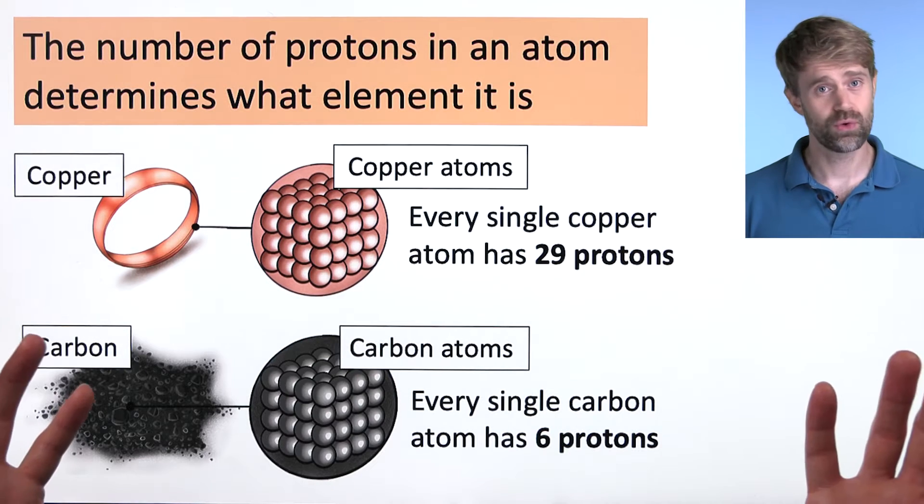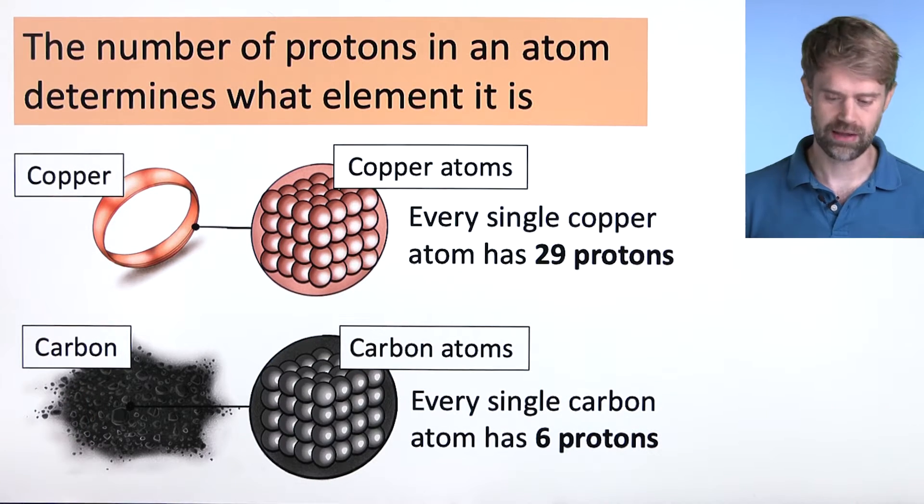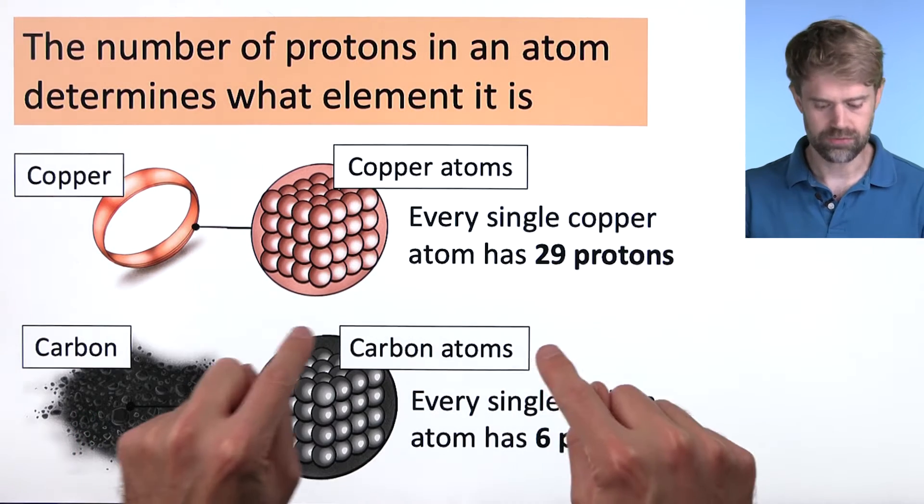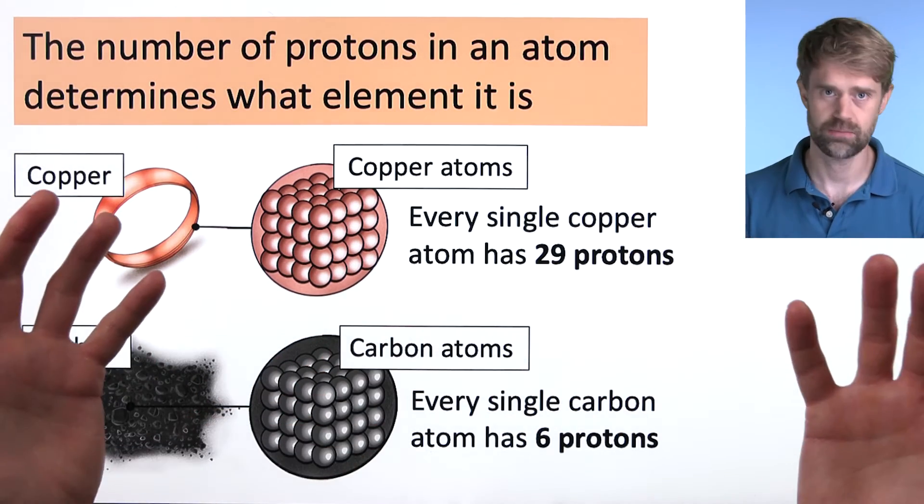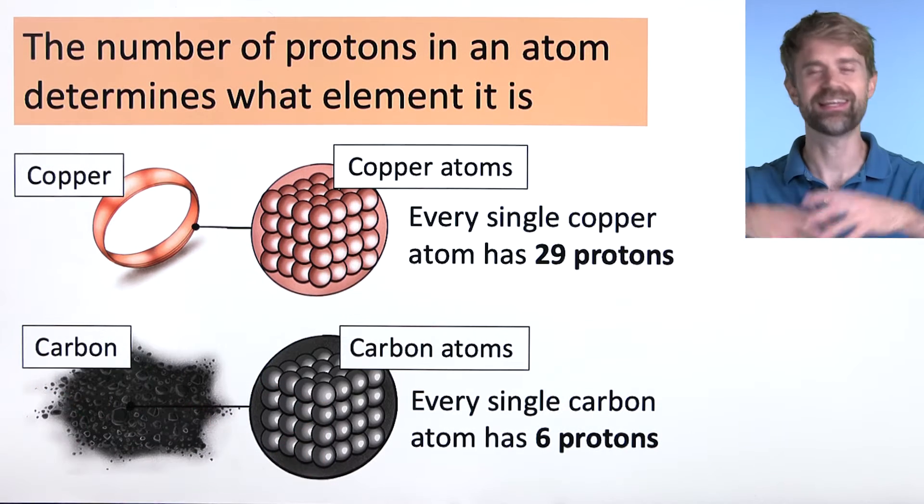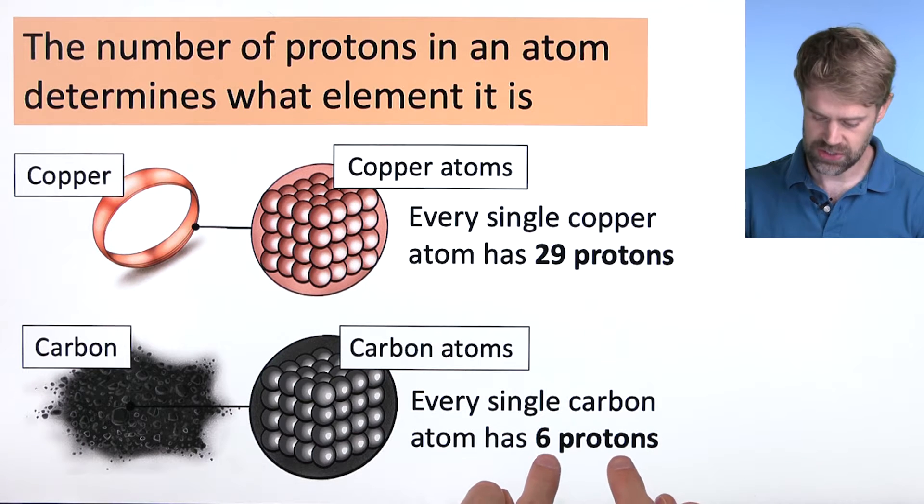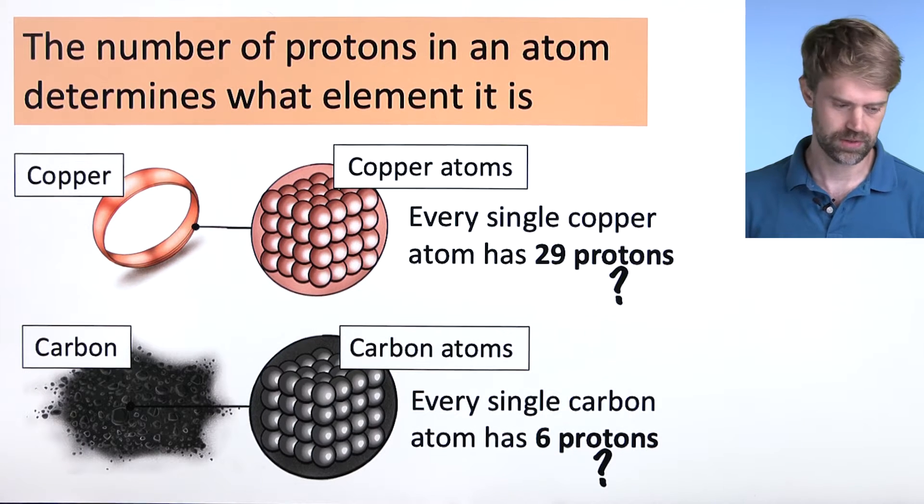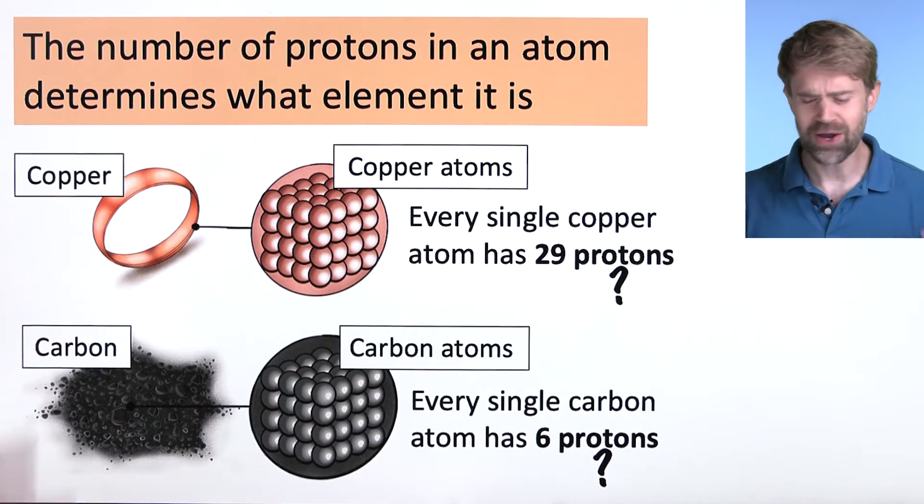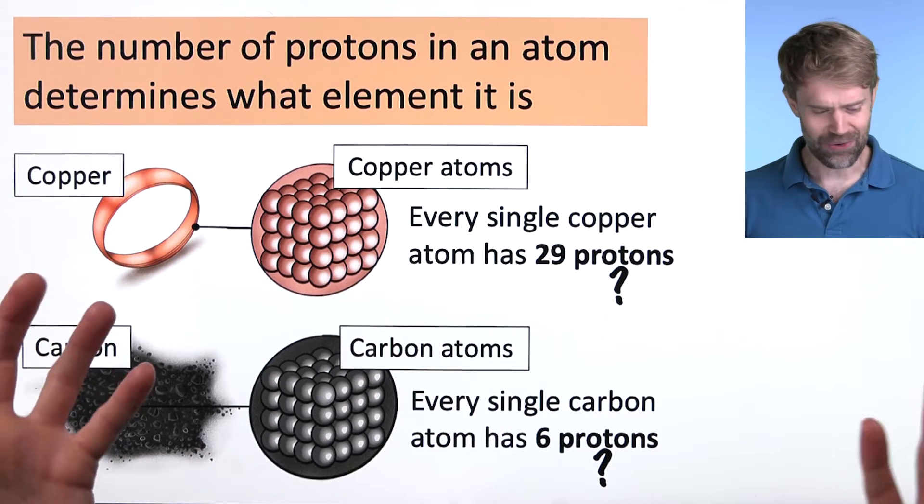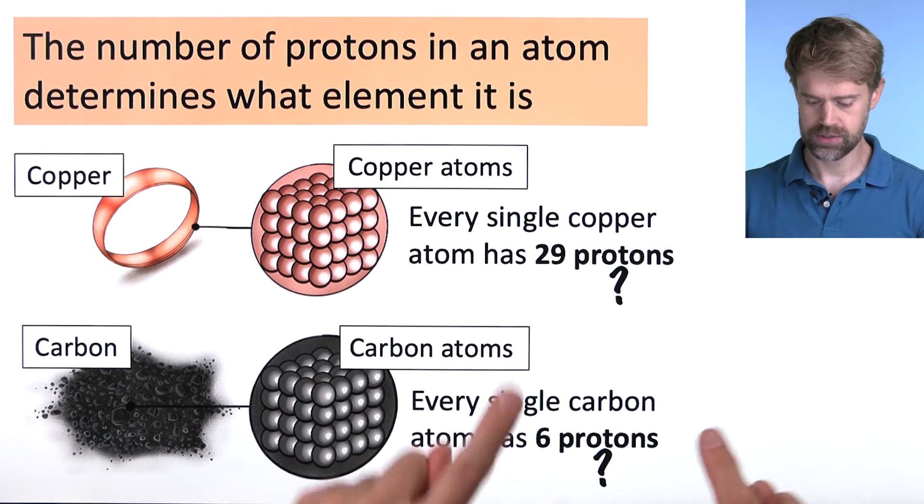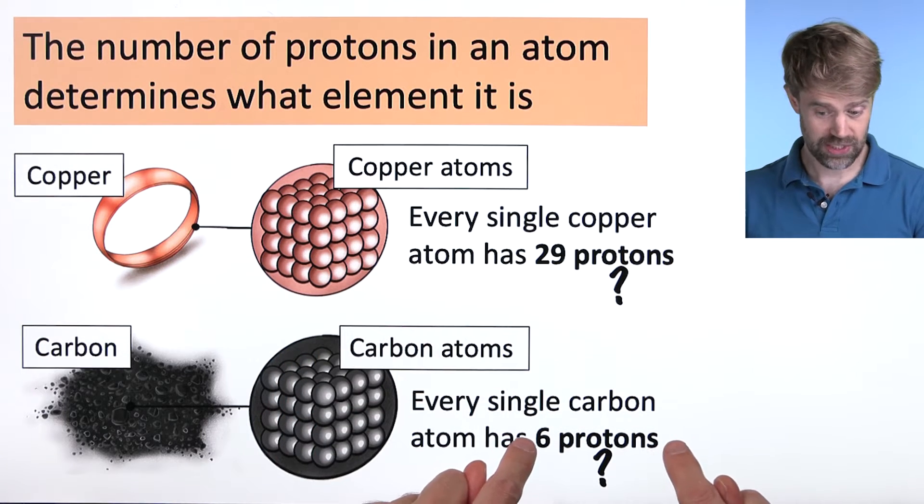The same rule is true for every element. Here's some carbon or charcoal that would be made of carbon atoms. Exact same deal. Every single carbon atom, in this charcoal and in the universe, has 6 protons in the nucleus. Now, you may be wondering, how do we know that? How do we know that every copper atom has 29 protons and every carbon atom has 6 protons?